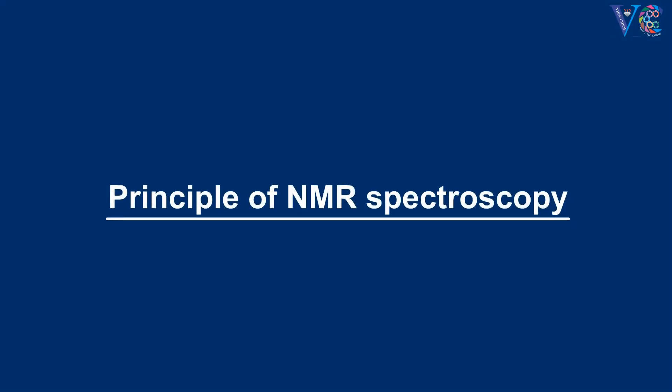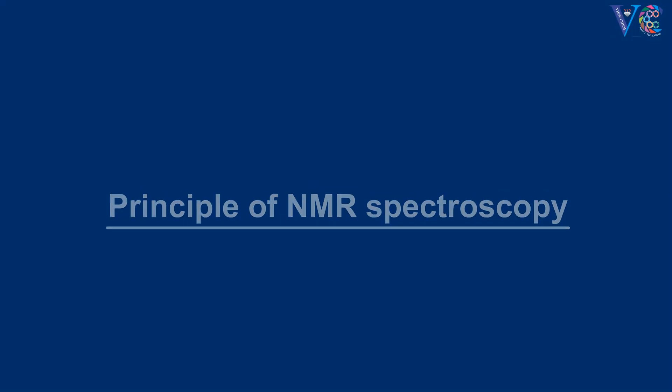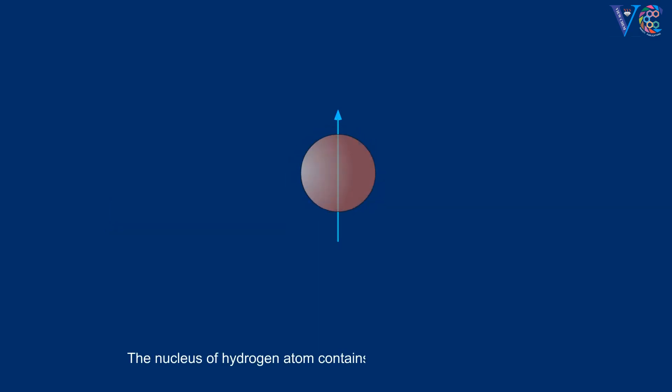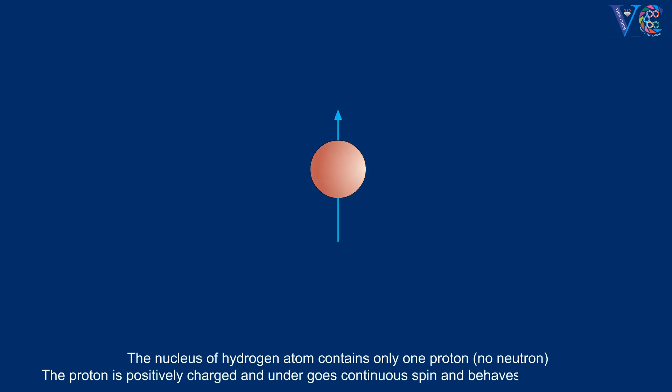Principle of NMR Spectroscopy. Nucleus of hydrogen atom contains only one proton, no neutron. The proton is positively charged and undergoes continuous spin and behaves like a bar magnet.